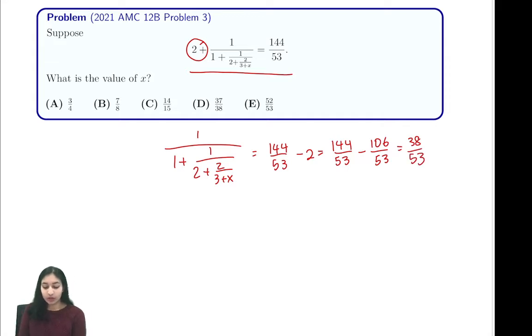Now we want to flip the expression so we can get rid of this numerator, and we'll see that 1 plus 1 over 2 plus 2 over 3 plus x equals 53 over 38.